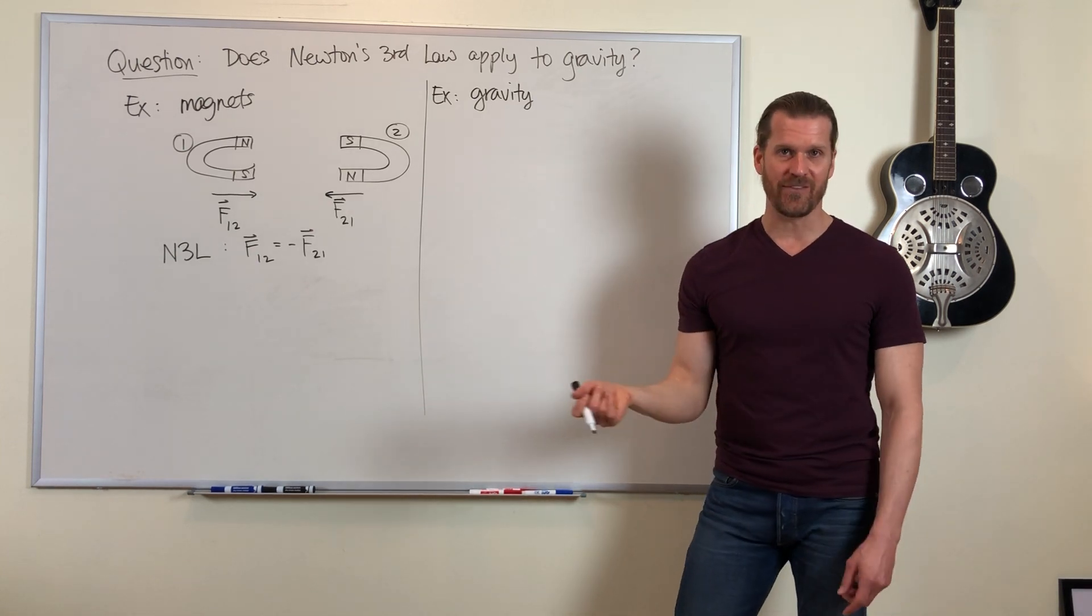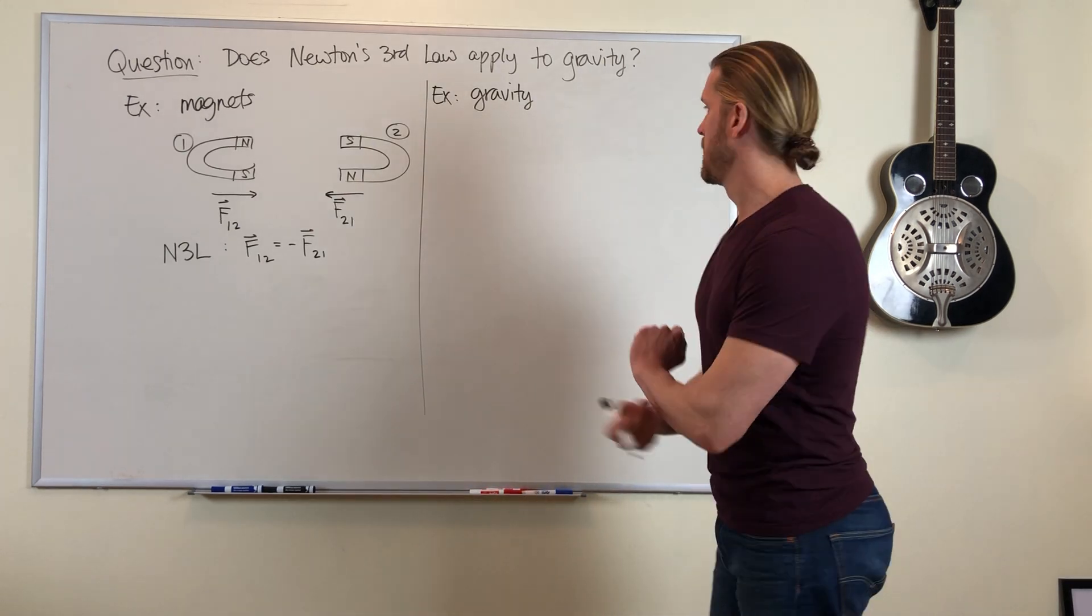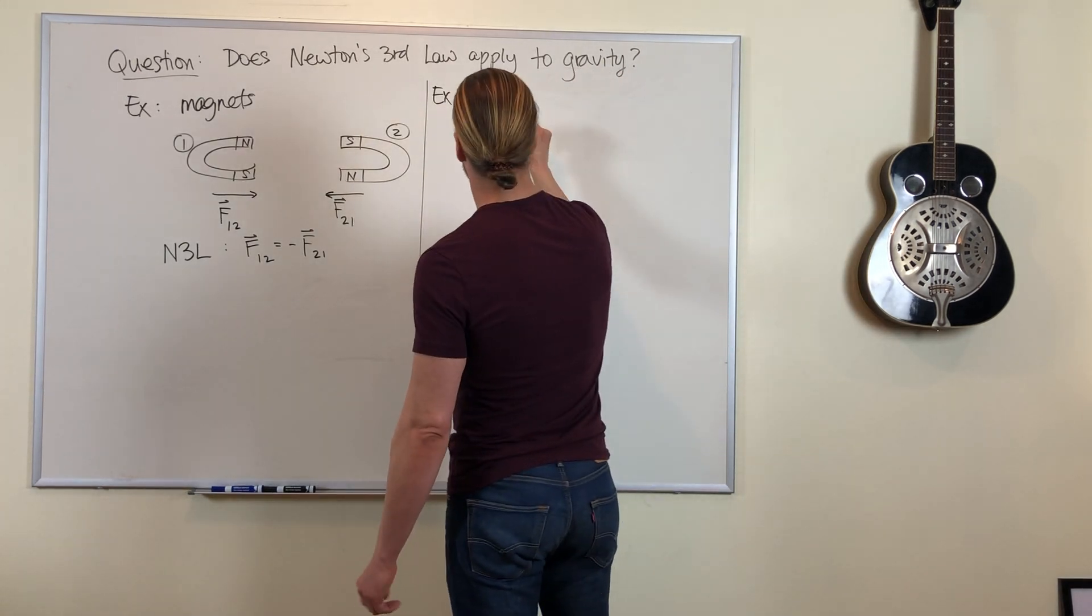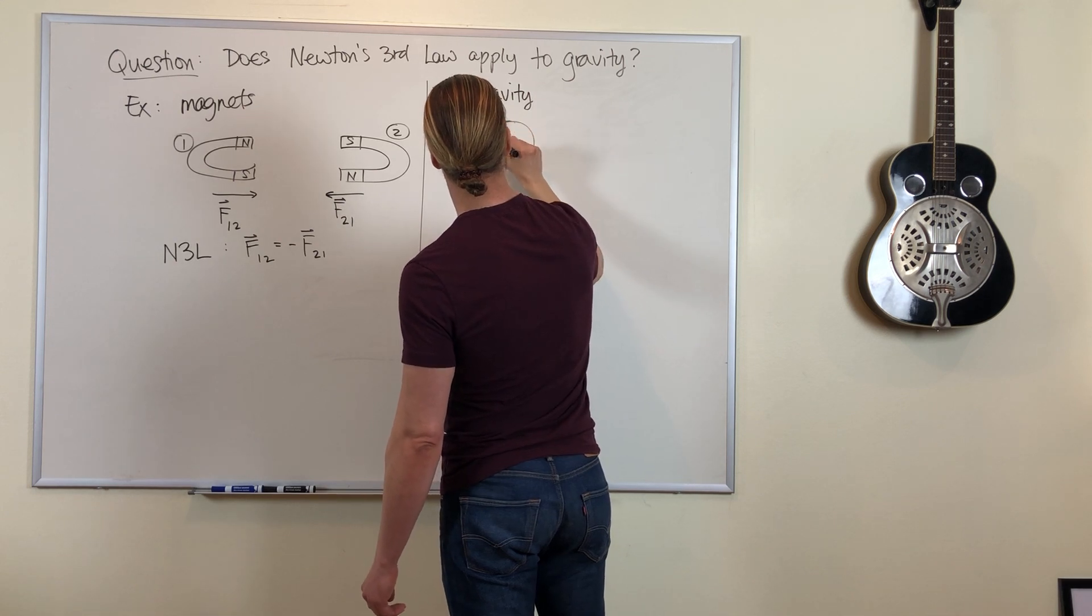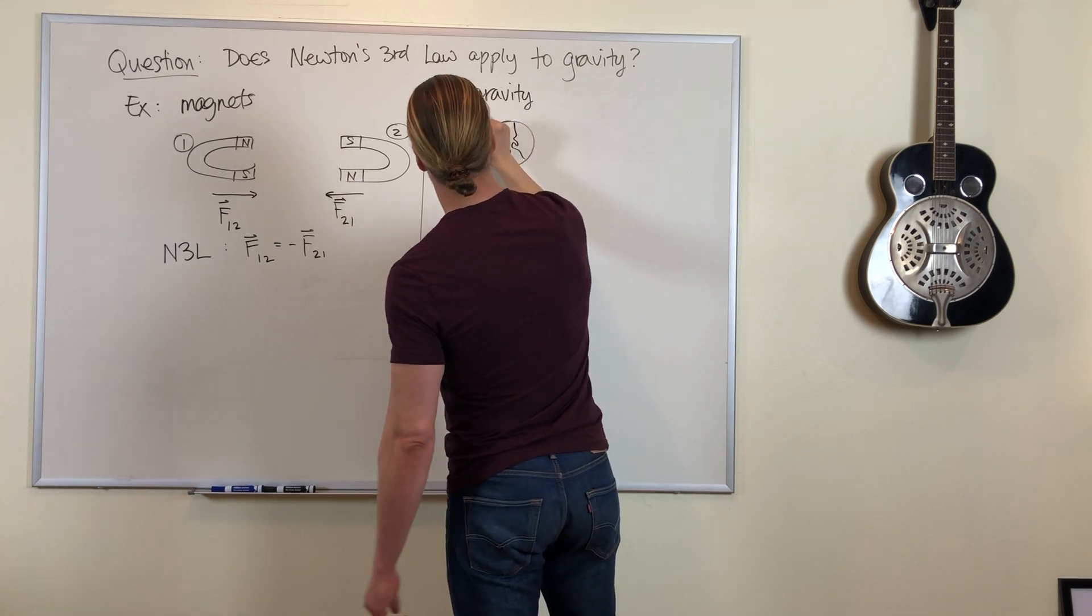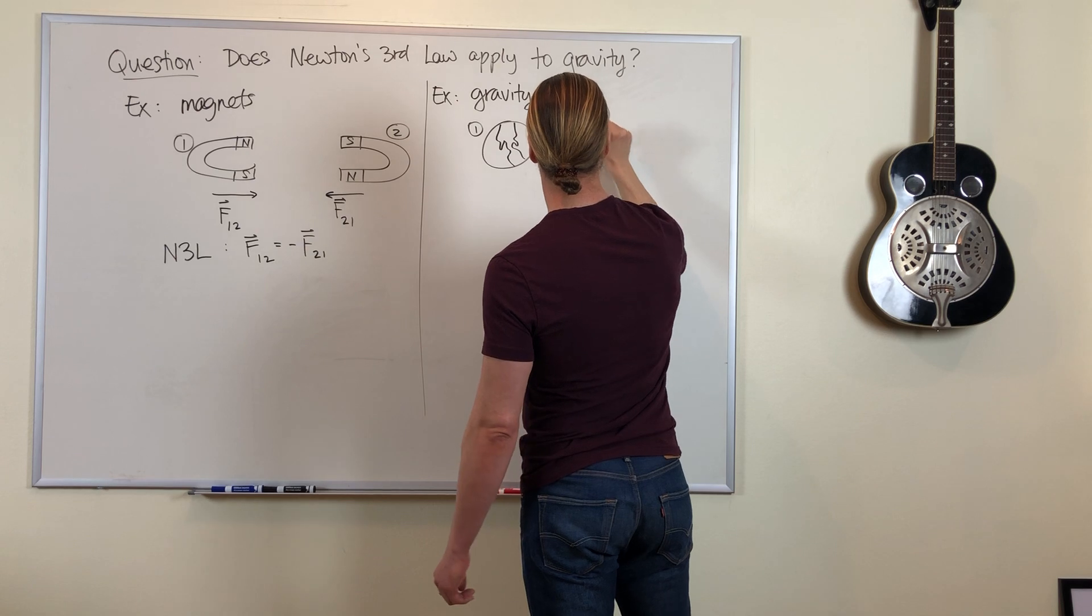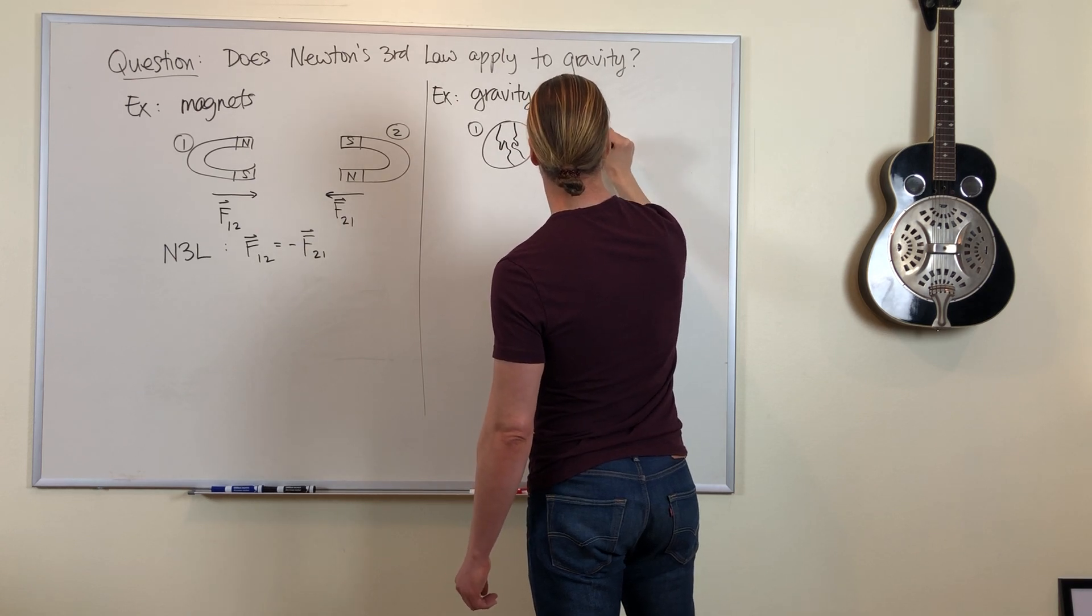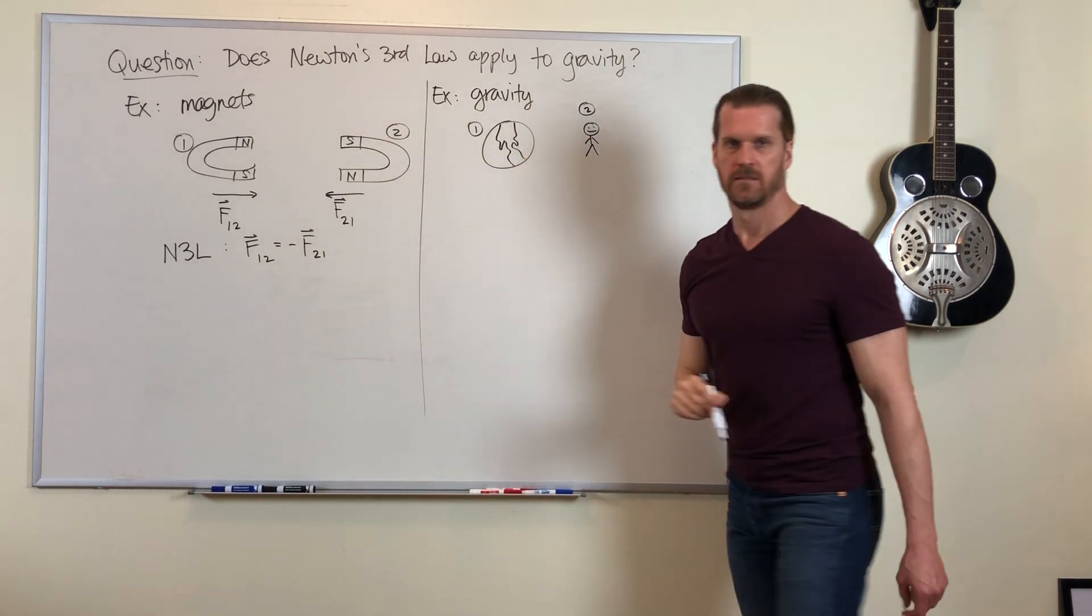It requires two masses to produce a gravity force. So let's say object one is planet Earth, and object two, not drawn to scale, is you.